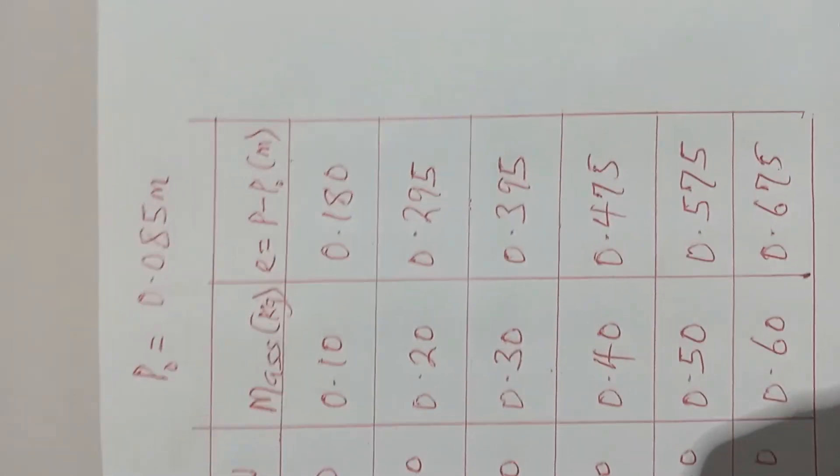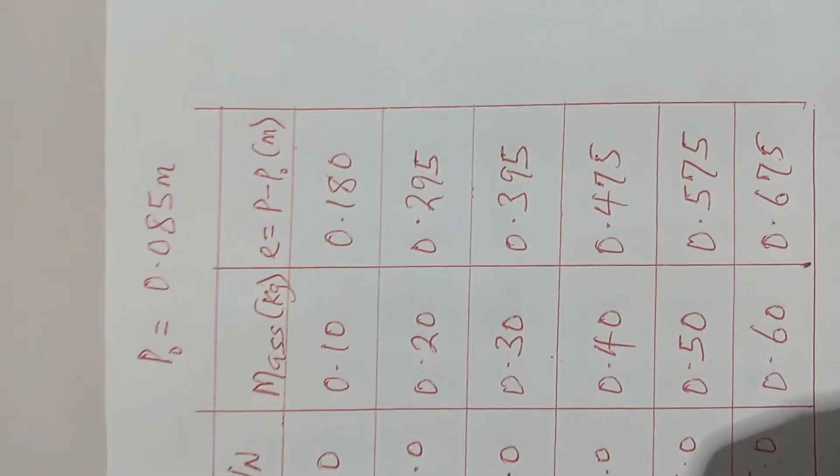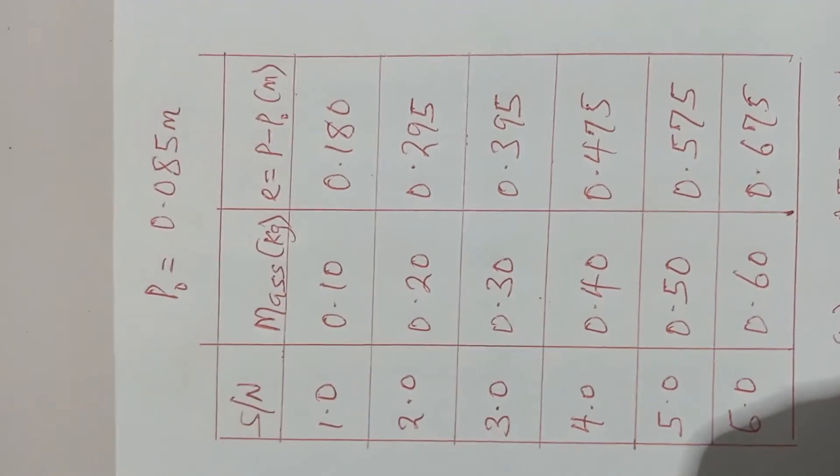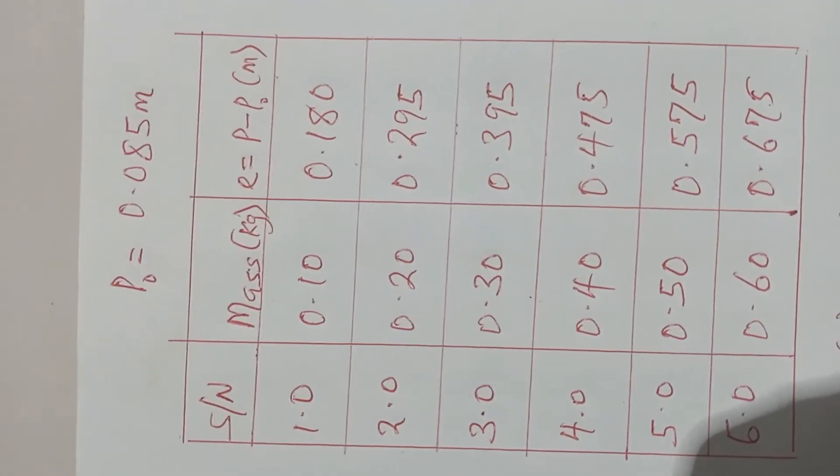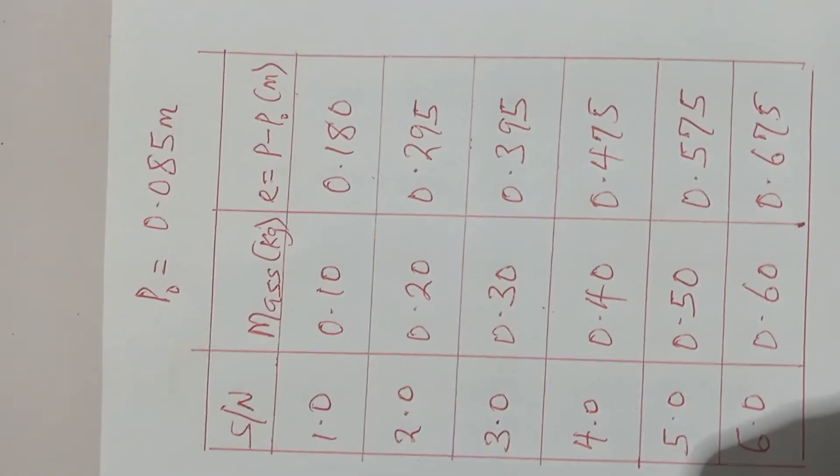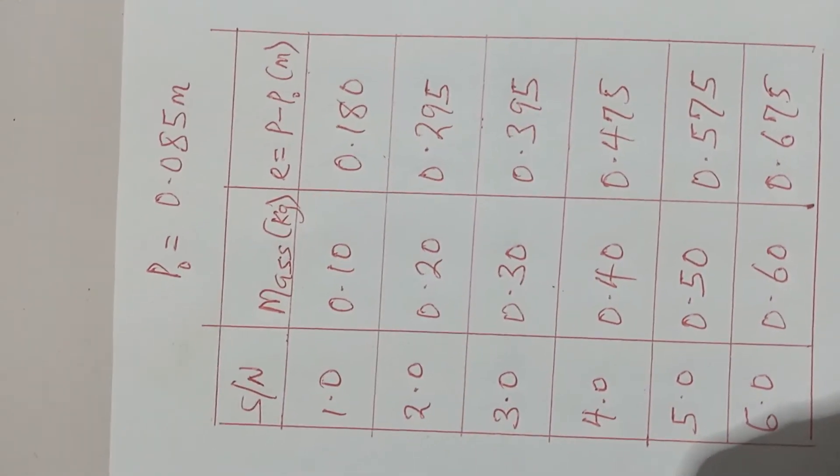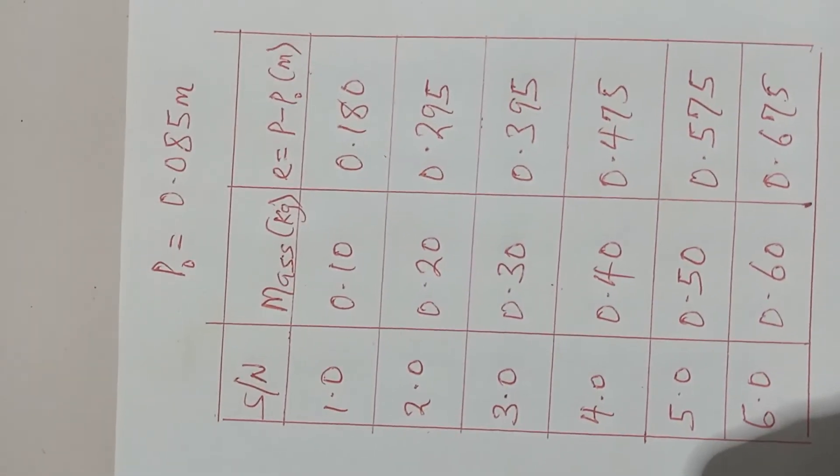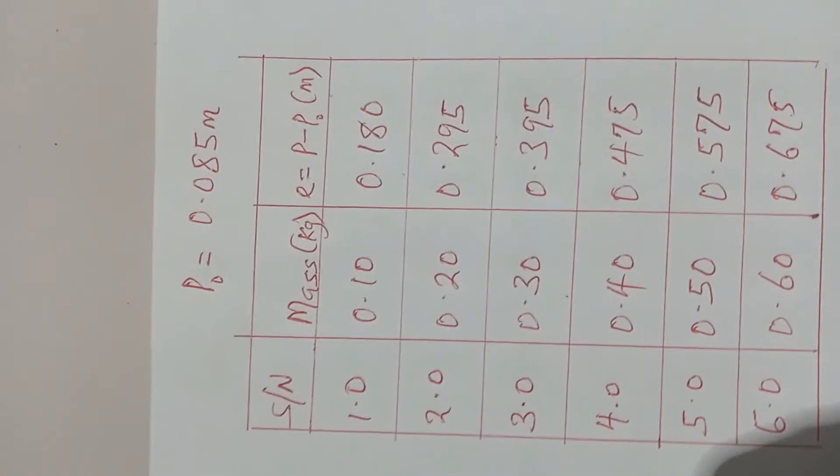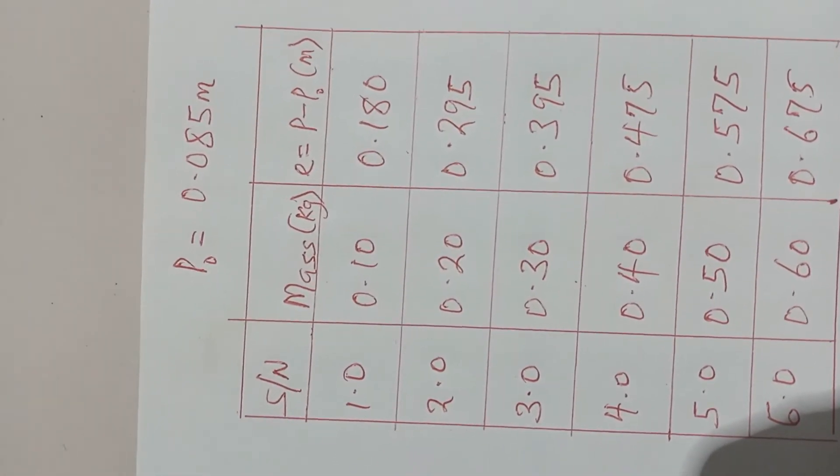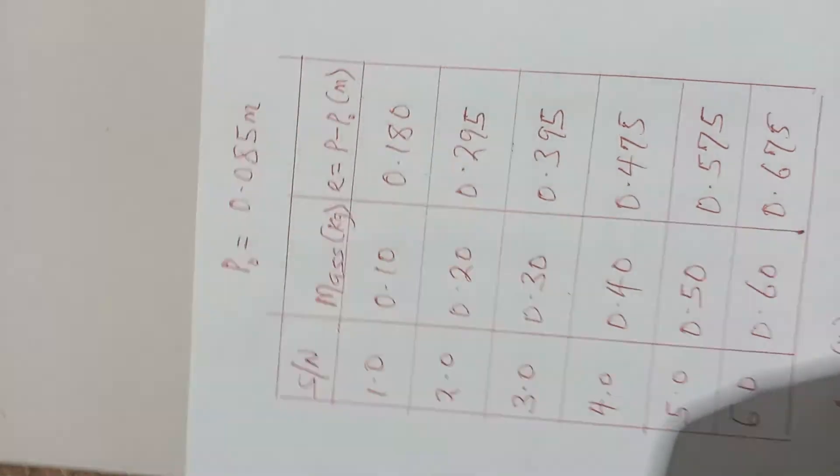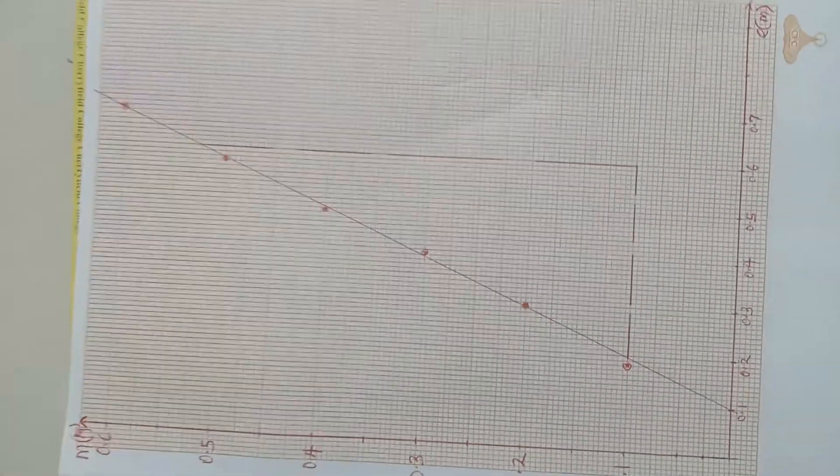Which is expected to pass through the origin, confirming the statement of Hooke's law which states that provided that the elastic limit of an elastic material is not exceeded, the extension produced is directly proportional to the applied force. So this is the applied force. So this is what my graph looks like in obedience to Hooke's law.